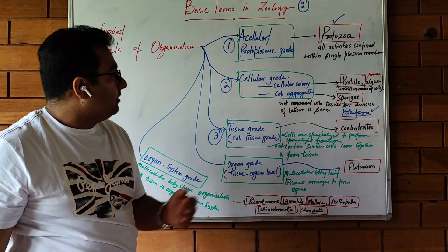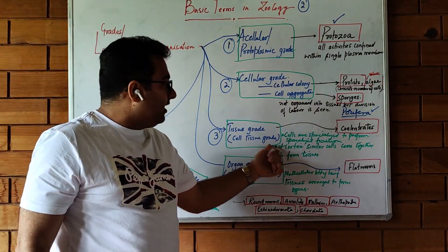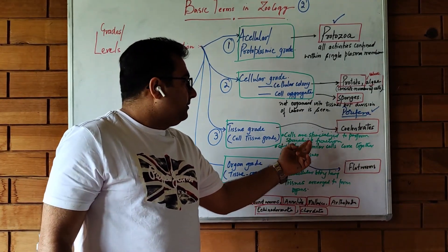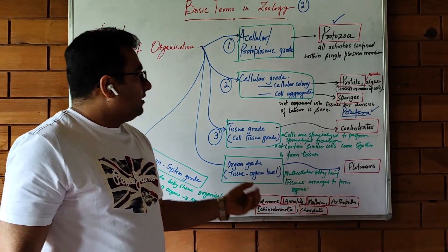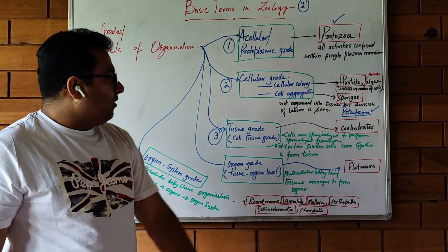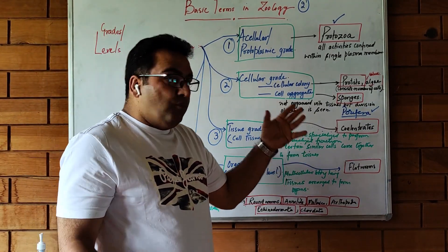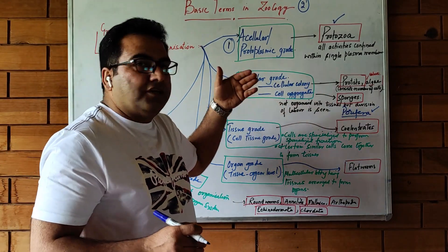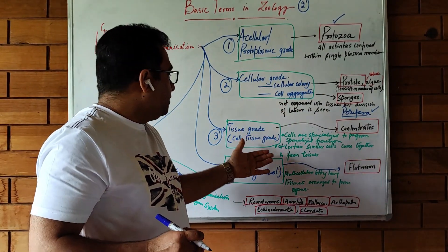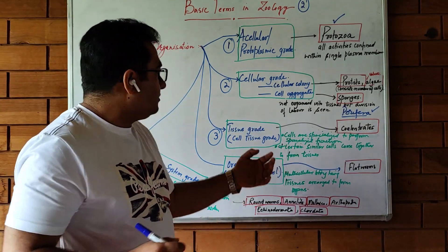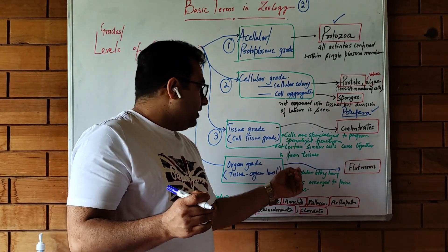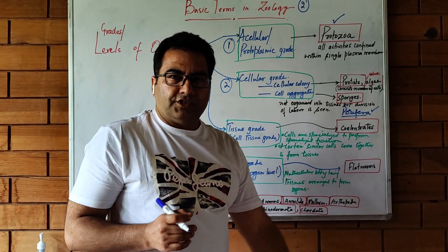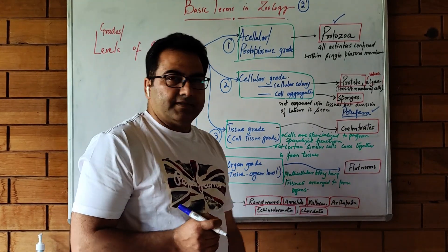The third grade is the tissue grade of organization, also called the cell-tissue grade. Here, similar cells come together to form tissues — in the earlier cellular grade, tissues were not formed, but in this grade they are. This kind of organization is seen in the case of the cnidarians.